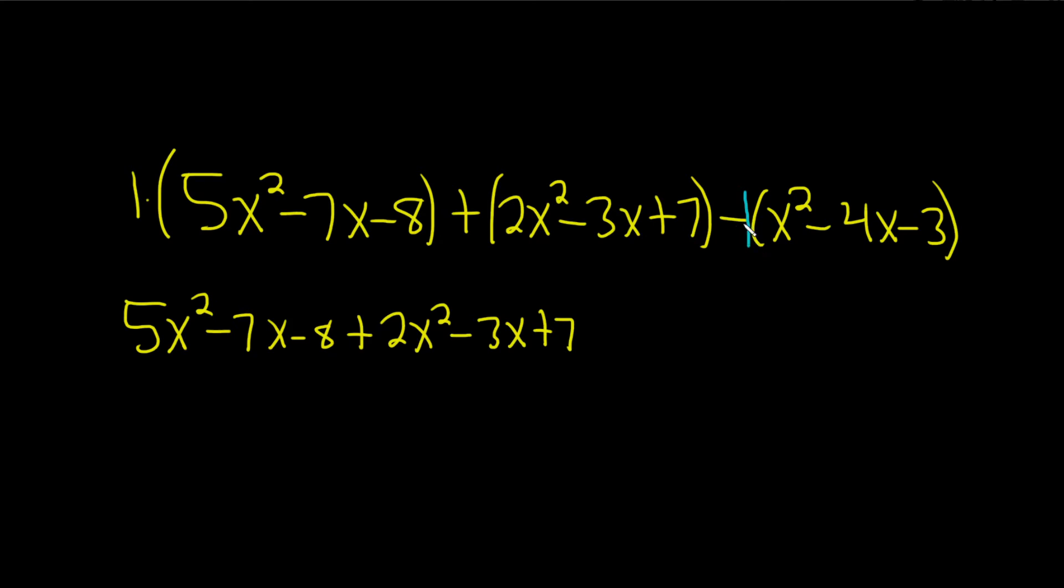There's really a 1 here and it's a negative 1 so it's going to change all the signs. It's important to take this negative 1 and multiply it by each term. So negative 1 times x squared gives us negative x squared, and negative 1 times negative 4x gives us positive 4x, and negative 1 times negative 3 gives us positive 3.